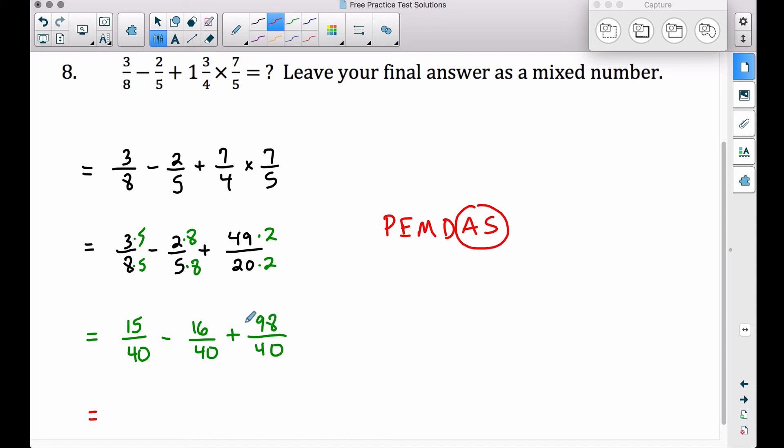From here, we want to subtract, and then we will add. Fifteen minus sixteen is negative one. If we go ahead and take that negative one and we add ninety-eight to it, we're going to get ninety-seven over forty. We leave that common denominator alone.